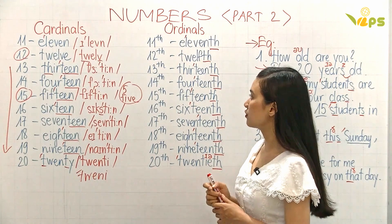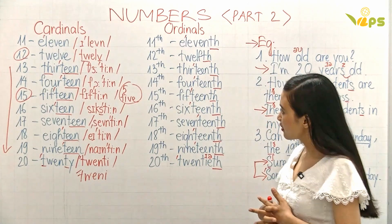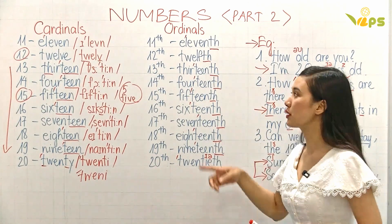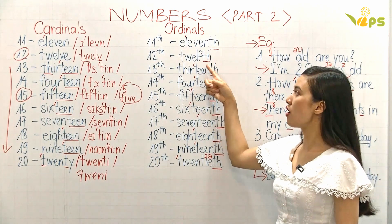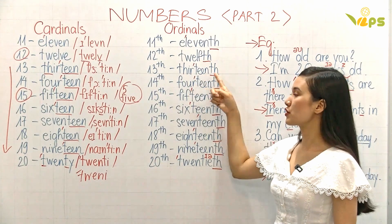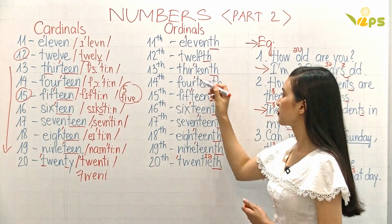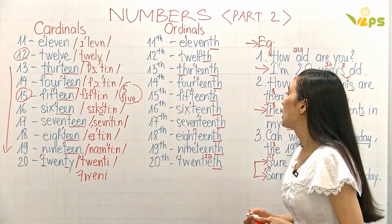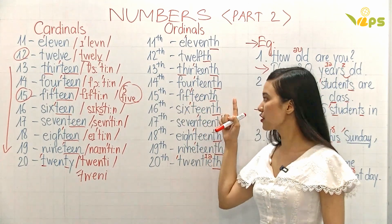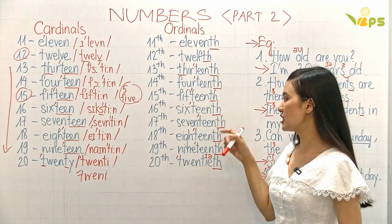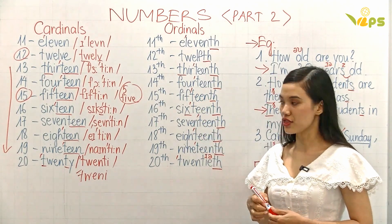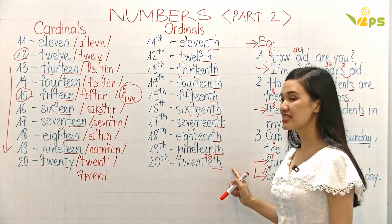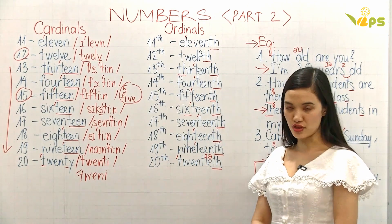Now for the ordinals, they are almost the same — just add TH at the end, okay? 11th, 11th. 12th, 12th. 13th, 13th. 14th, 14th. 15th. 16th — remember: 6th, 16th. 17th. 18th. 19th. 20th. Okay, let's do them all together one more time.